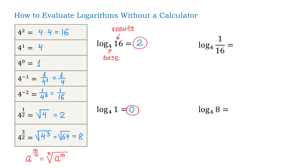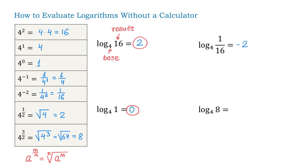In the next example, we will evaluate log base 4 of 1 over 16. So, 4 to what power equals 1 over 16? We see that 4 to the power of negative 2 is 1 over 16. Therefore, log base 4 of 1 over 16 equals negative 2.